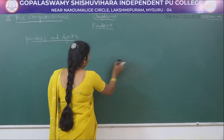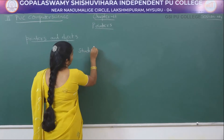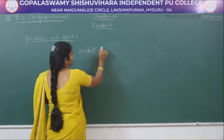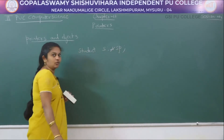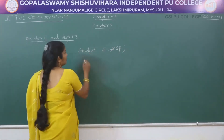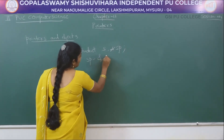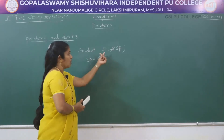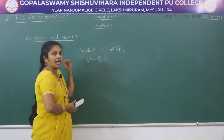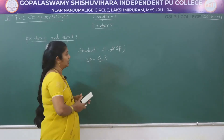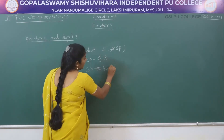For example, student is the class name. We create a regular object 's' and a pointer object 'sp'. Then we write sp = &s, meaning the address of the regular object s is transferred to the pointer object sp.